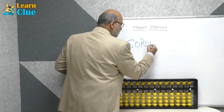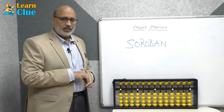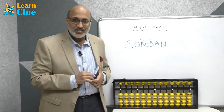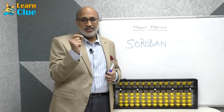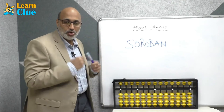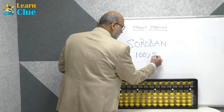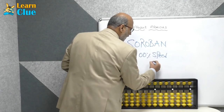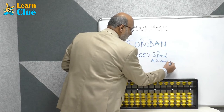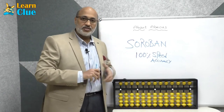For every concept there is one objective, and abacus also has a motto. The objective or motto of abacus is 100% speed and accuracy. By learning abacus, you are going to acquire 100% speed and accuracy.